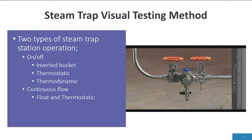When it comes to visual testing methods, there are two types of steam traps: on-off operation, which includes inverted buckets, thermostatic, and thermodynamic designs; and the continuous flow type steam trap, which is the float and thermostatic design steam trap.